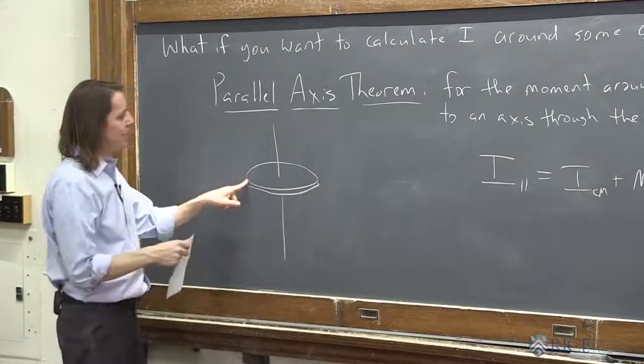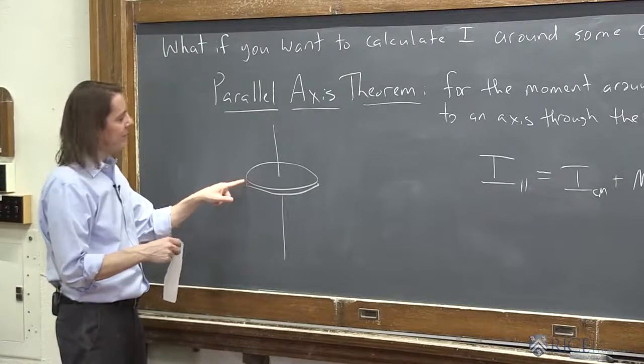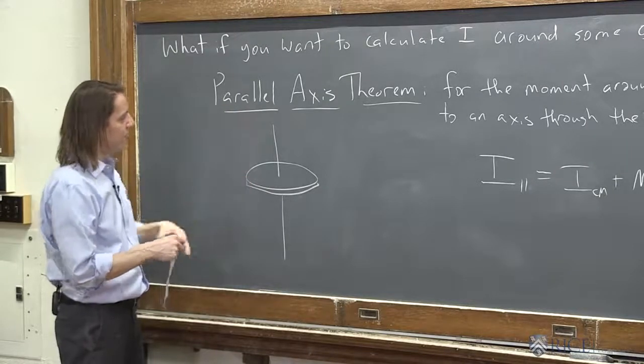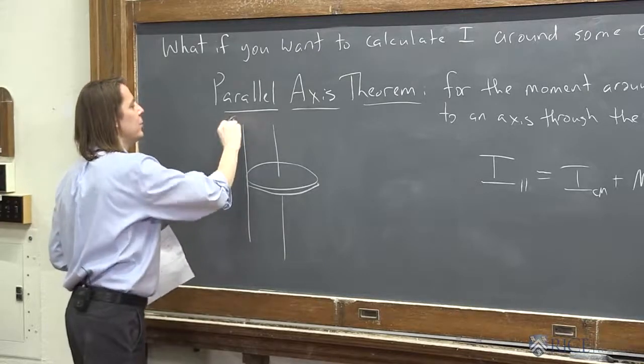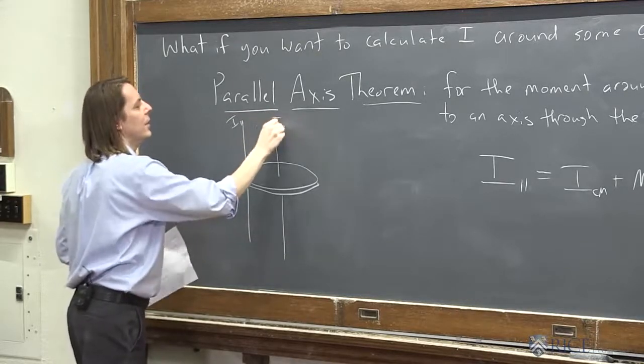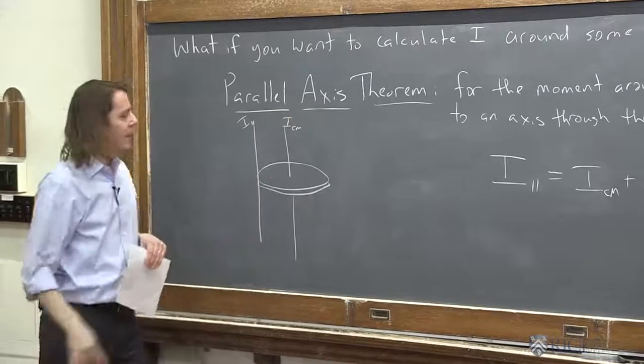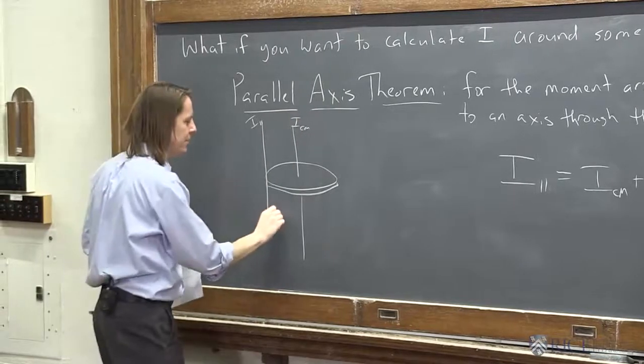So now you want to rotate it about this point. So your axis has to go through the edge, but also it has to be parallel to the other axis. So this is your parallel axis. We want I here. This is I_CM. And then d is just a separation of the two axes.